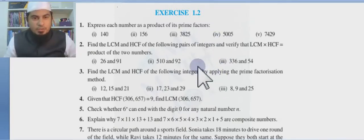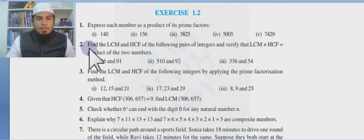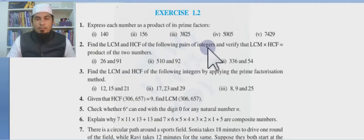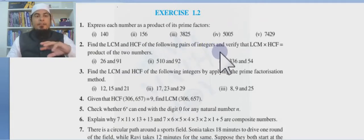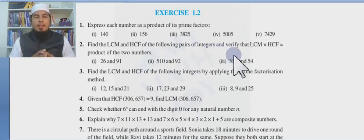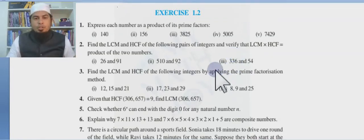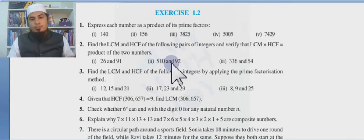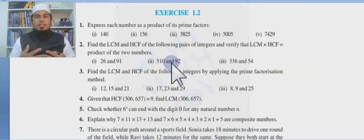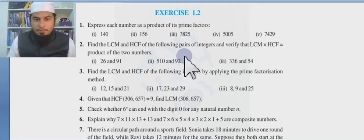Question 2 asks us to find the LCM and HCF of the following pairs of integers and verify whether LCM times HCF equals the product of the two numbers. Let us take question 5 with numbers 510 and 92. We will find HCF and LCM by using prime factorization and check whether HCF times LCM is correct.